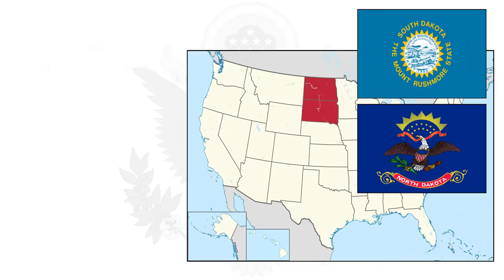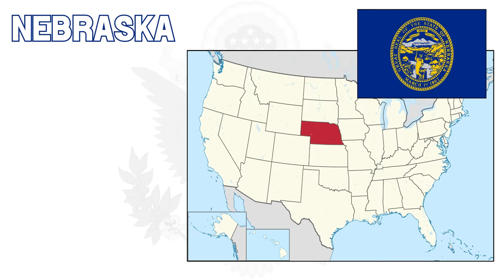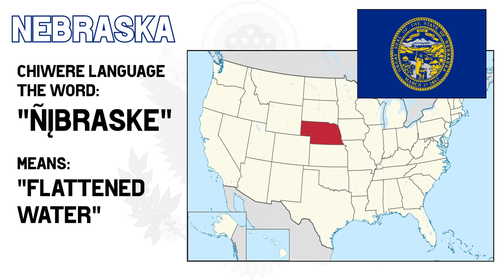North and South Dakota have the same name, minus the geographic indicator, named after the Dakota Sioux Native American tribes. Dakota is actually also a word in the language of these people, literally meaning 'allies' or 'friends.' Nebraska's name comes from the native Chiwere language, specifically the word Nebraska, which literally means 'flattened water.' It was first chosen as the name for the Nebraska River, and then for the territory and state.